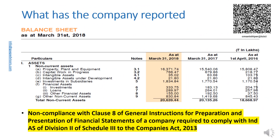A listed company other than NBFC has reported non-current assets in the balance sheet as shown in this slide. The company has presented investments in subsidiaries as a separate line item, which is in compliance with Para 58 and 59 of Ind AS 1. However, the company has presented the line item not within financial assets.